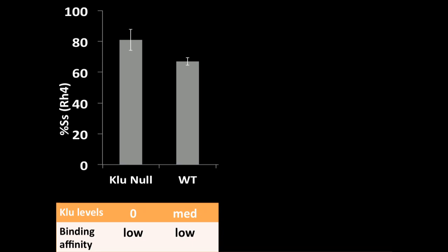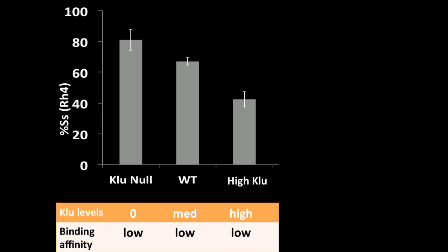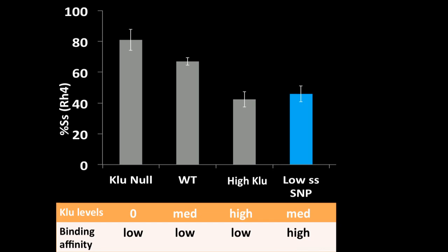So just a summary is what I've shown you so far. In a Clue null situation, we have zero Clue levels and low binding affinity. In a wild-type situation, we're now having endogenous levels of Clue, and this causes a decrease from what we saw in the Clue null. When we overexpress Clue, we now have high Clue but still low binding affinity. And so we see another decrease in the ratio of spineless on-to-off cells.